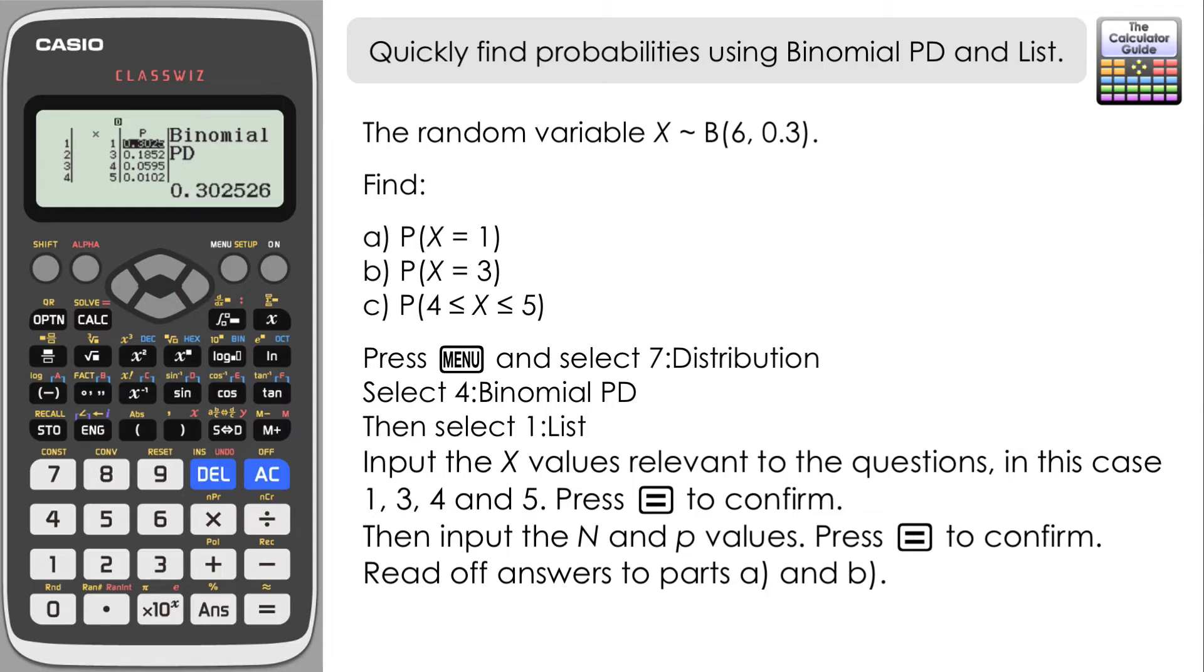Well, this first probability that we have in the column, that's the answer to part A. Probability of x equaling 1 is 0.302526. Very quick there, we can just read that directly from the list, and that's the answer to part A.